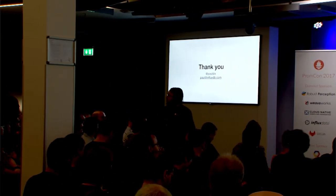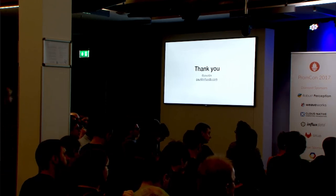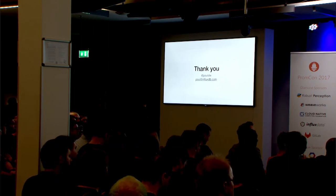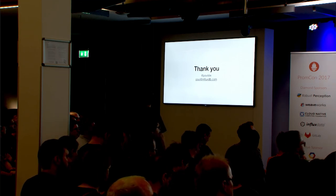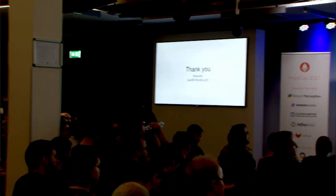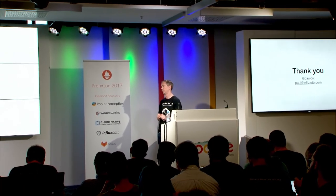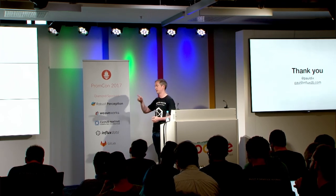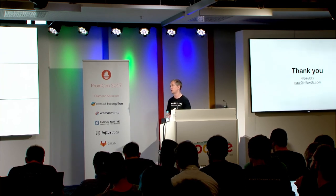Question: I understood that Prometheus is planning at some point to include the type of the metric in its data model so you can distinguish between counters and gauges. Are you planning to do this in the new data model and query language? Answer: We have talked about having type as part of it. In the spec for the new data model, I have `__type__` as a reserved tag name so we could later work with that in the query engine.